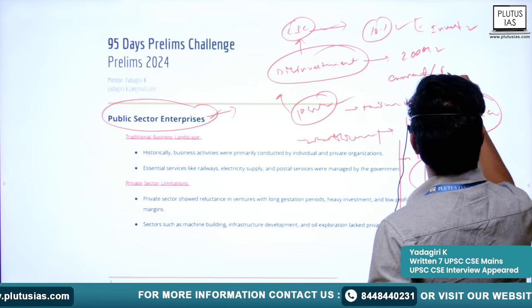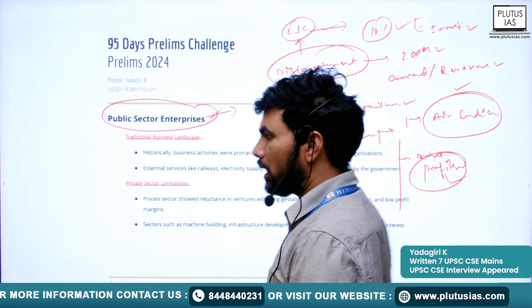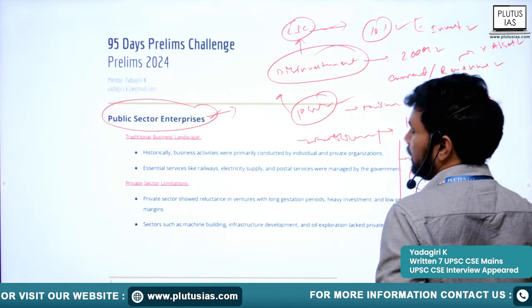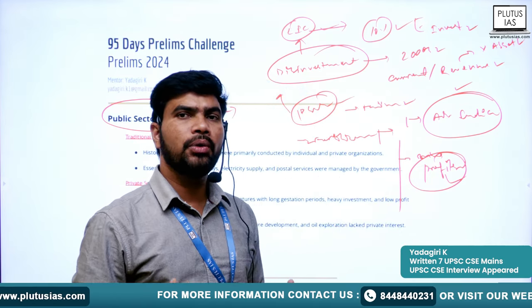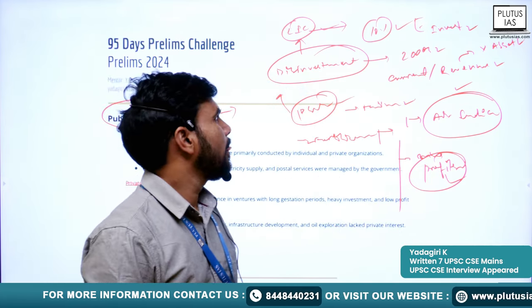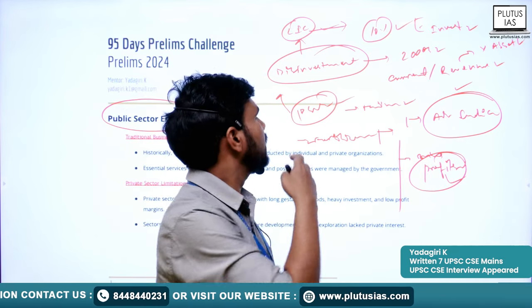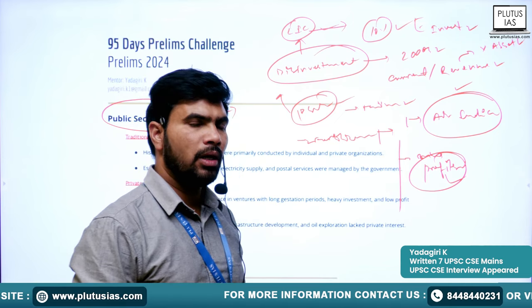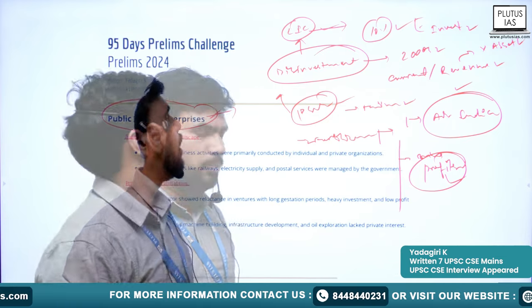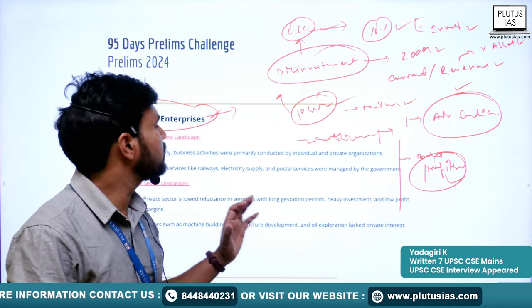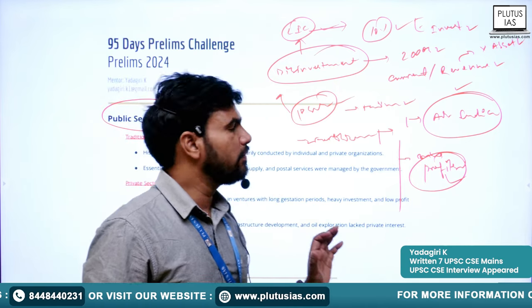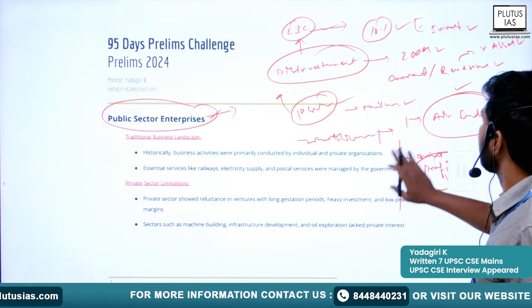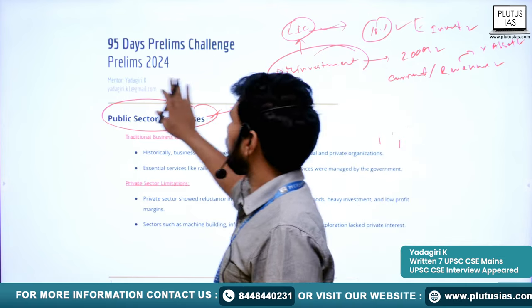However, there has been a lot of criticism of the disinvestment process. Revenue expenditure does not create assets — it covers day-to-day expenses like paying salaries. Many experts criticized the government's policy because capital assets were being withdrawn from companies and used for revenue or current expenditure rather than productive investment. We will study disinvestment and its positives and negatives in detail when we discuss mains-related topics.